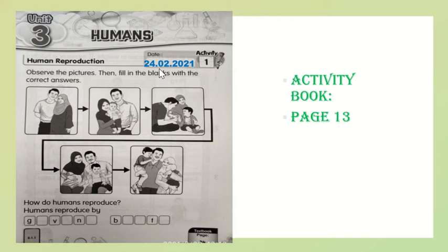We want to learn about human reproduction. Now, look at the picture here. We have 1, 2, 3, 4, 5. Okay, observe the picture and then we fill in the blank with the correct answer.